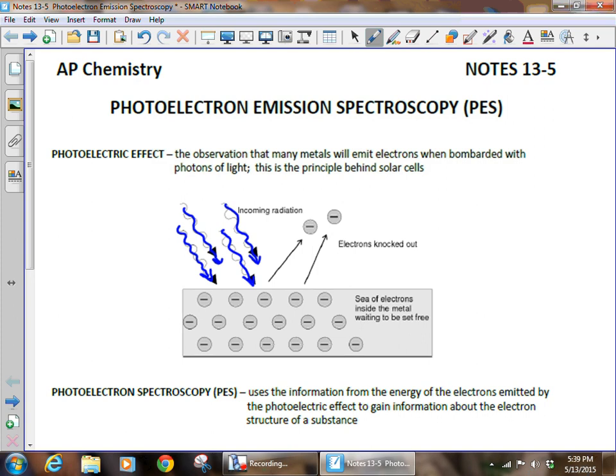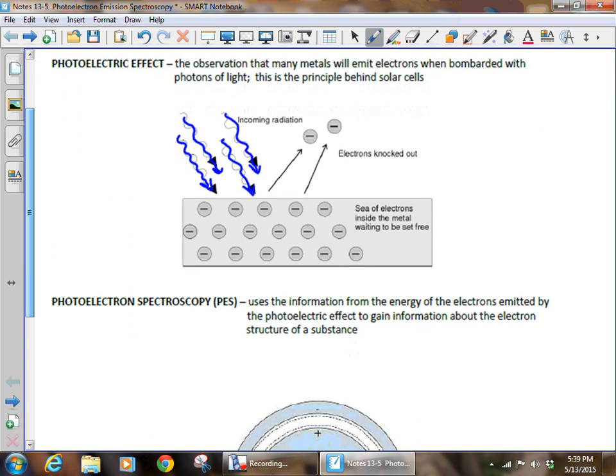And those electrons are knocked out, and the PES data is based on the energy of those electrons that are knocked out during that photoelectric effect. And remember, the photoelectric effect is what is the basis for solar energy because if we collect those electrons and send them through a circuit, we can light a light bulb or produce electric energy that way.